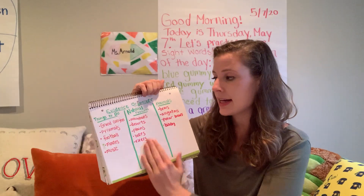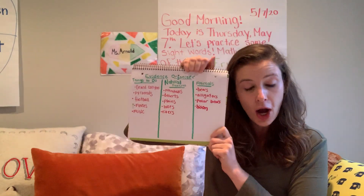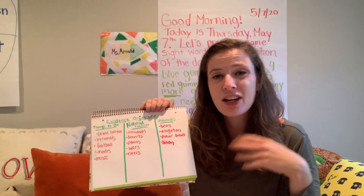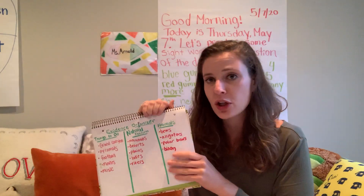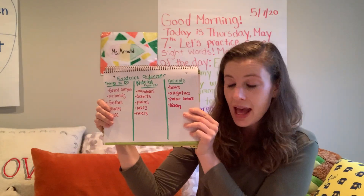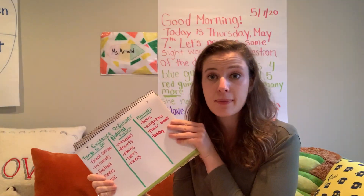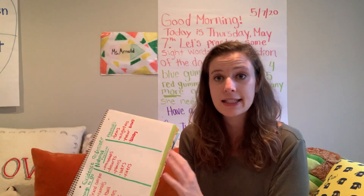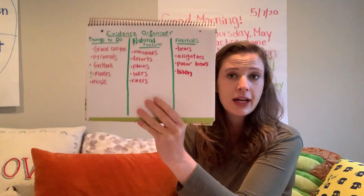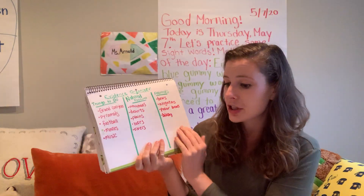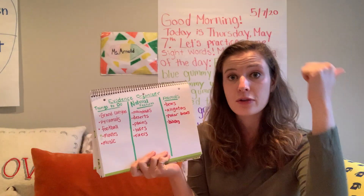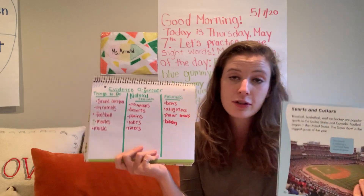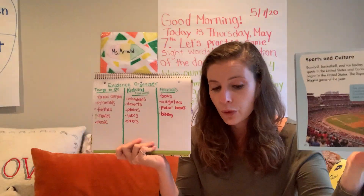Now we have collected some evidence. Tomorrow our question is going to be: why might people want to visit North America? You're going to pick maybe one, two, or three of the things that you've written down, and say 'people might visit North America because...' and then give some reasons. That's going to be tomorrow. For today, just focus on creating this evidence organizer. If you want to just listen to me read the story, you can go back to the videos earlier this week, part one and part two, to see if you can make your own evidence organizer, or you can use mine — whatever works for you.